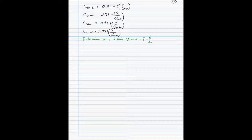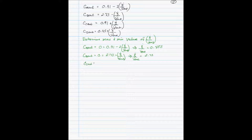Now we want to determine the maximum value of the reaction extent divided by the volumetric flow rate leaving the reactor. That occurs when each component concentration could be zero, so we set each of the four equations equal to zero. For component A, the extent over volumetric flow rate is 0.455; for B it is 2.73; for C it is negative 0.91; and for D it is negative 0.45. Therefore, the maximum of this ratio is 0.455 and the minimum is negative 0.45.